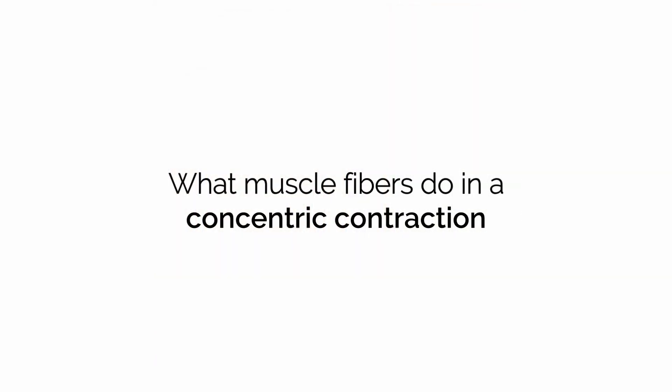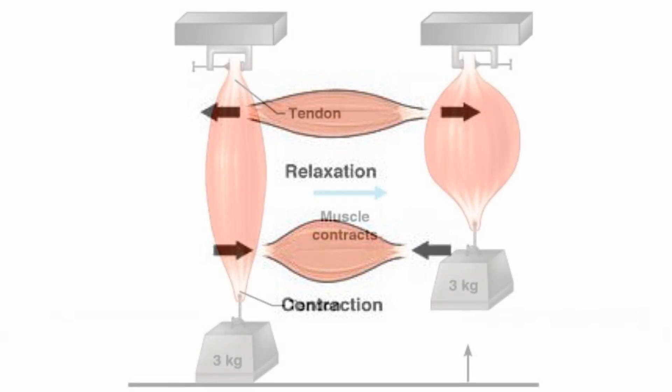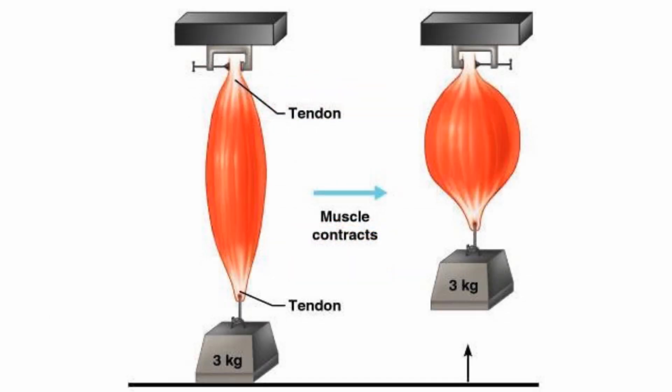First, let's look at what happens when a muscle does a concentric contraction. The muscle fibers get shorter, so the whole muscle gets shorter. Skeletal muscles are attached to bones on either end by their tendons, so when a muscle contracts and gets shorter, these bones are brought closer together.